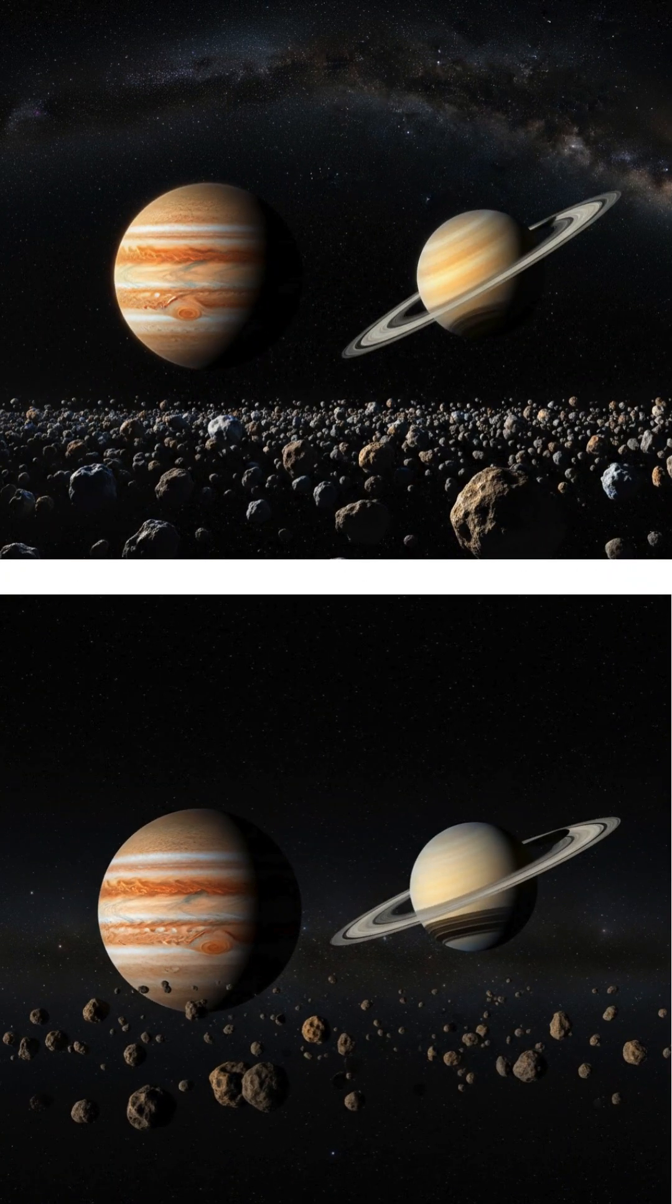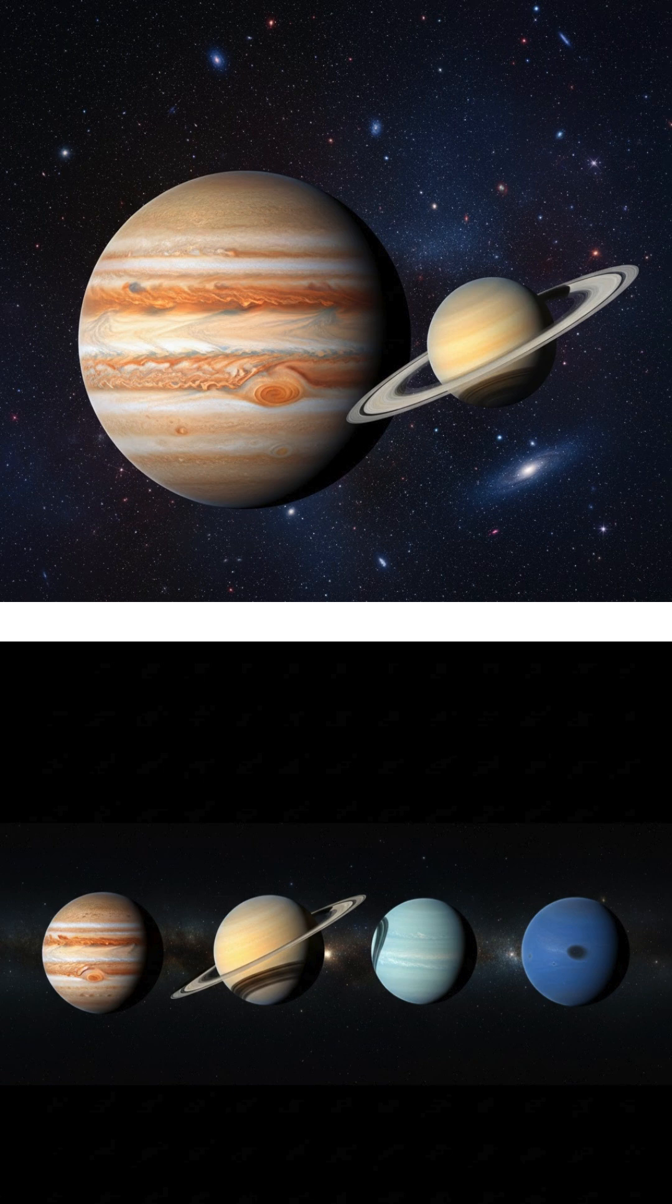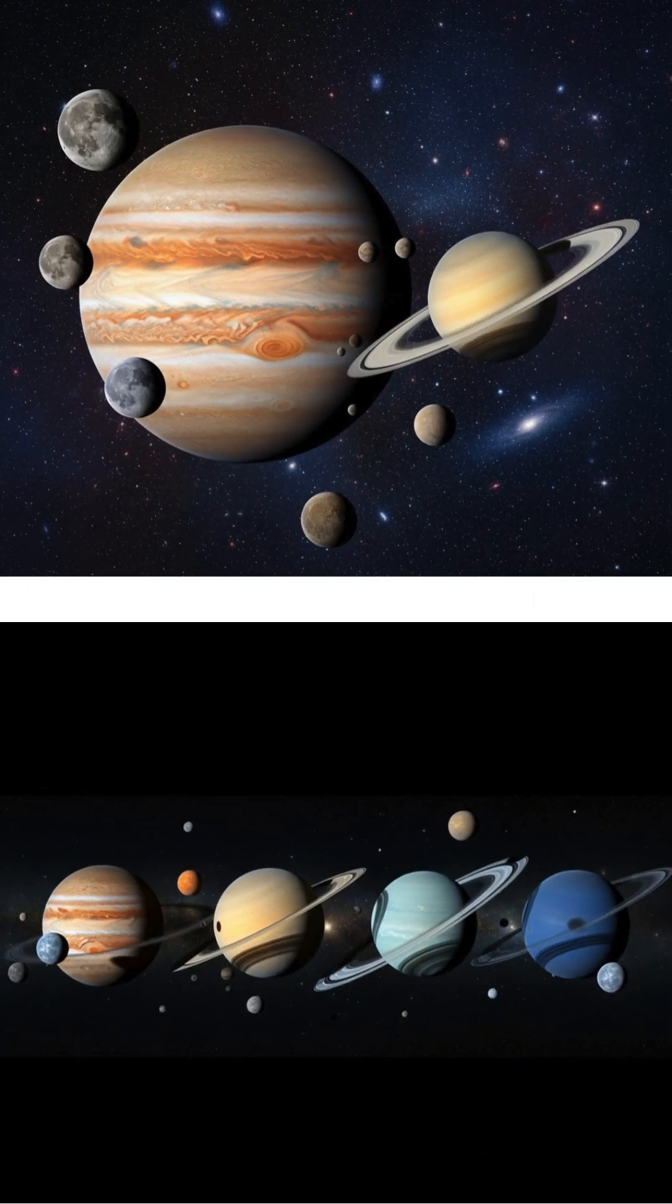Beyond the belt reside the two gas giants, Jupiter and Saturn. These are the solar system's largest planets, primarily composed of hydrogen and helium, with no solid surface. They are known for their spectacular ring systems and their large families of moons.